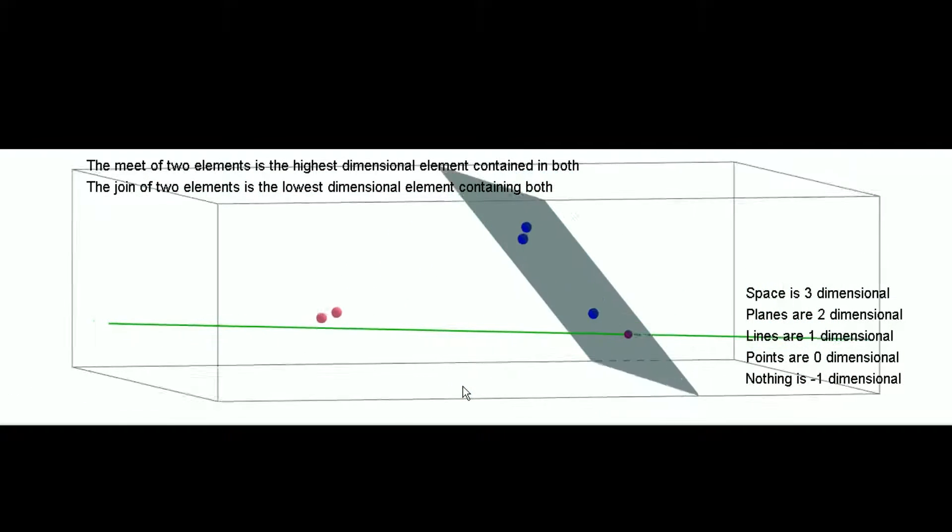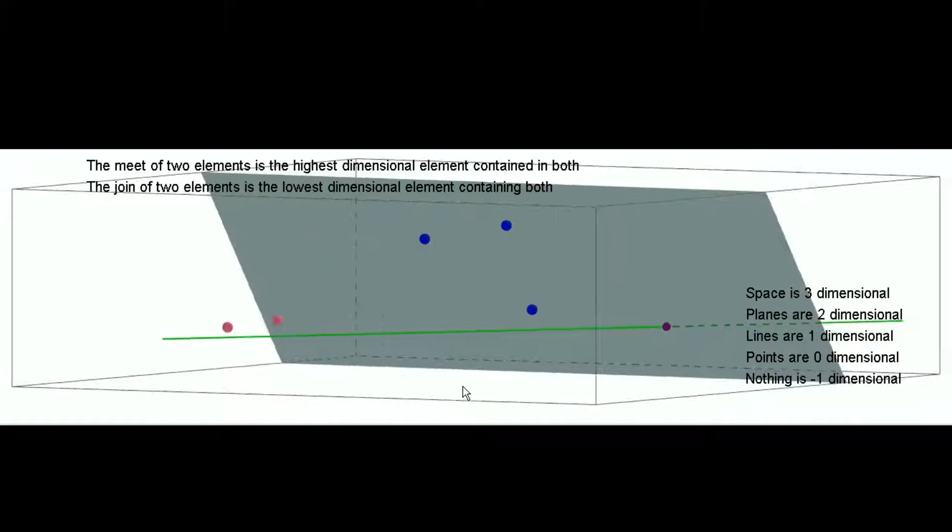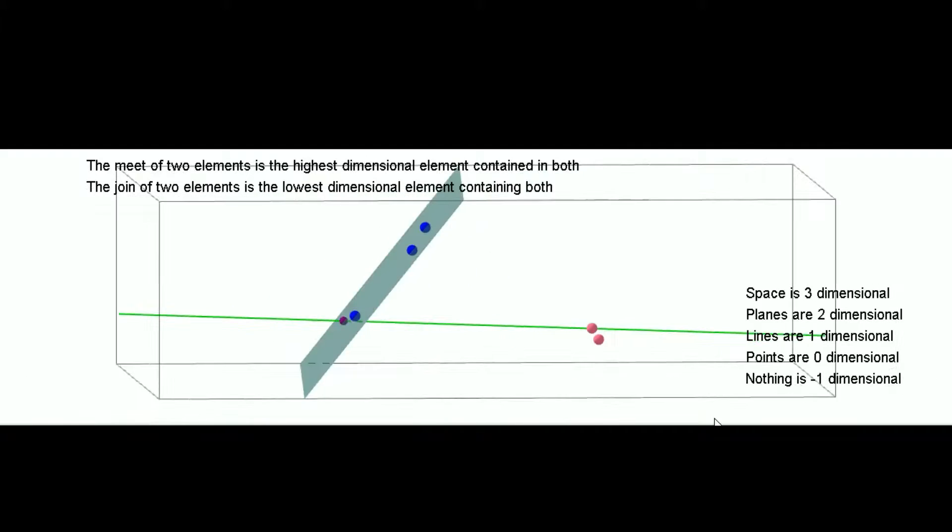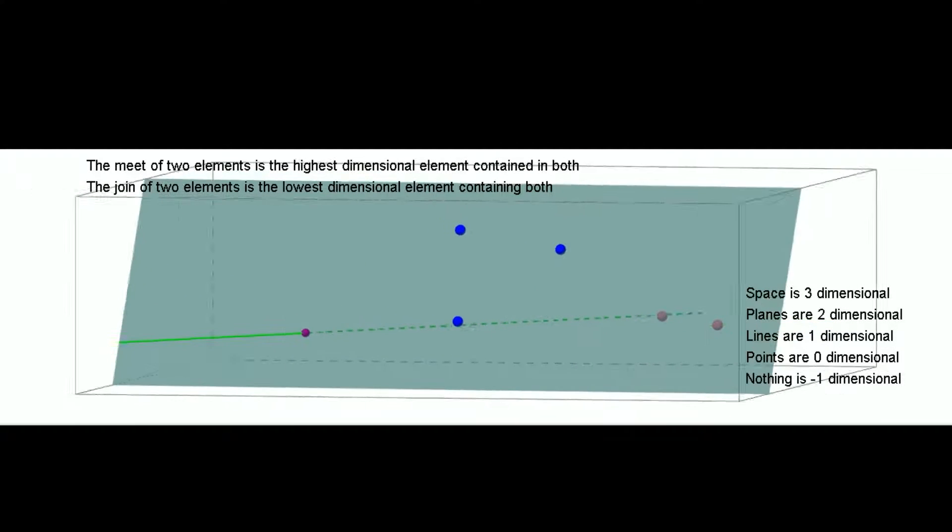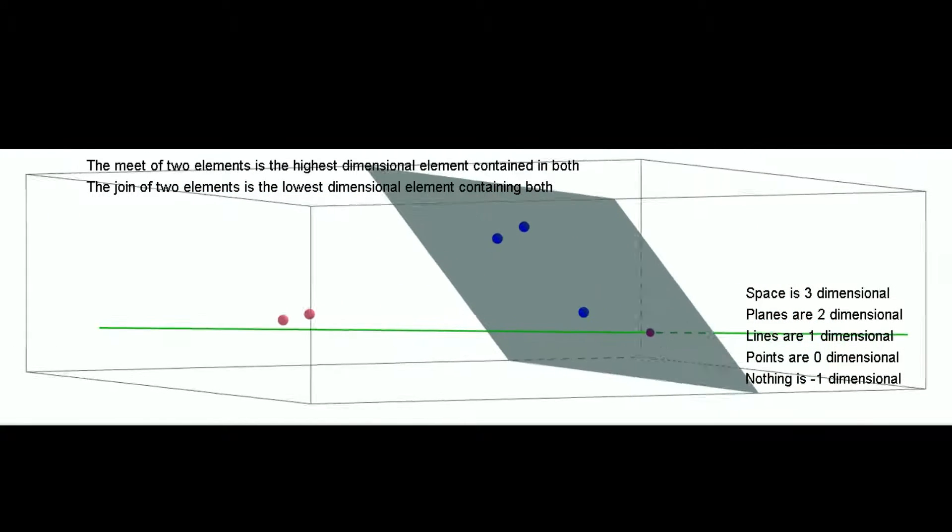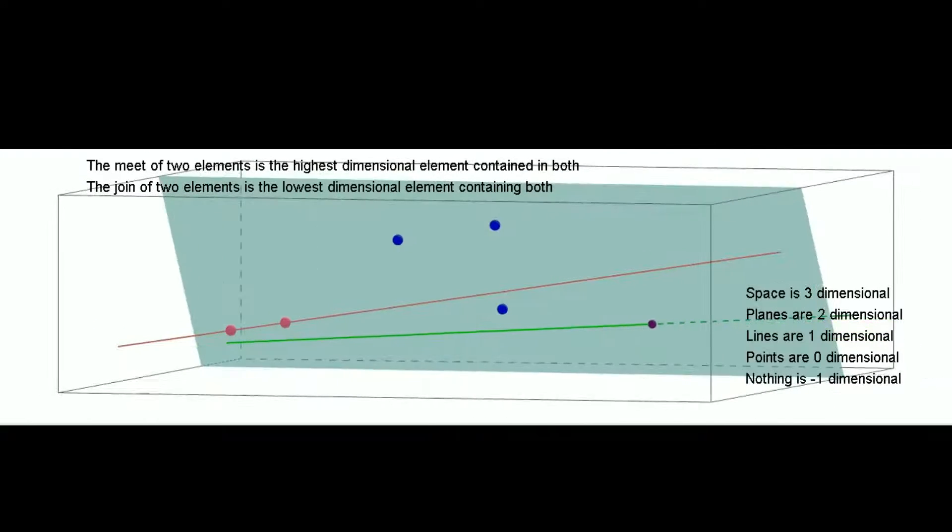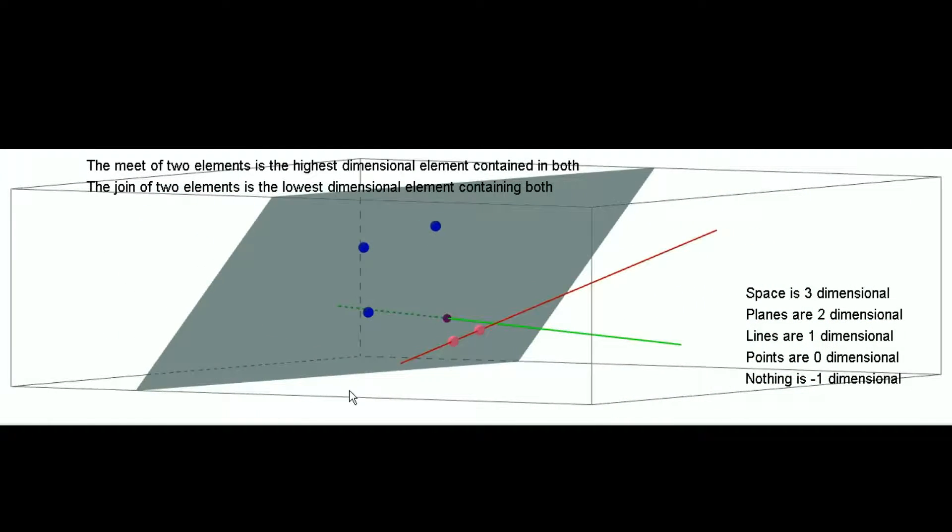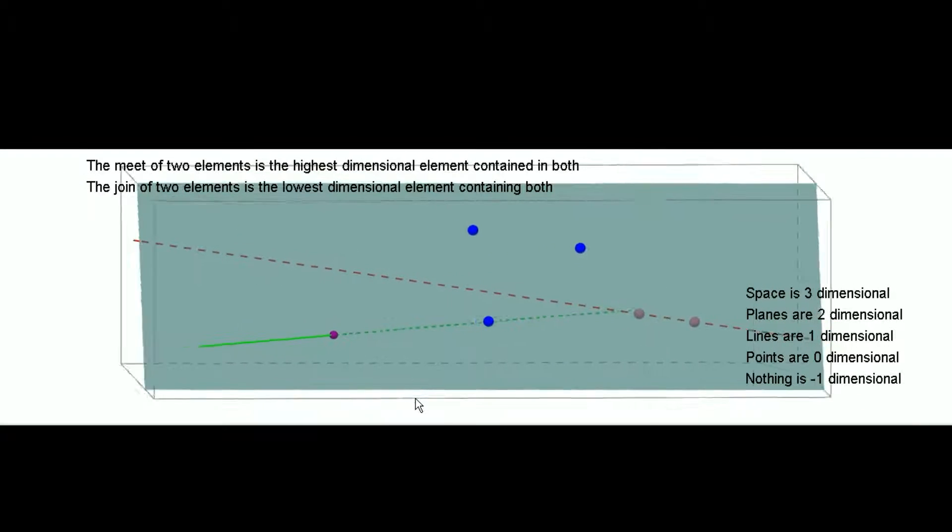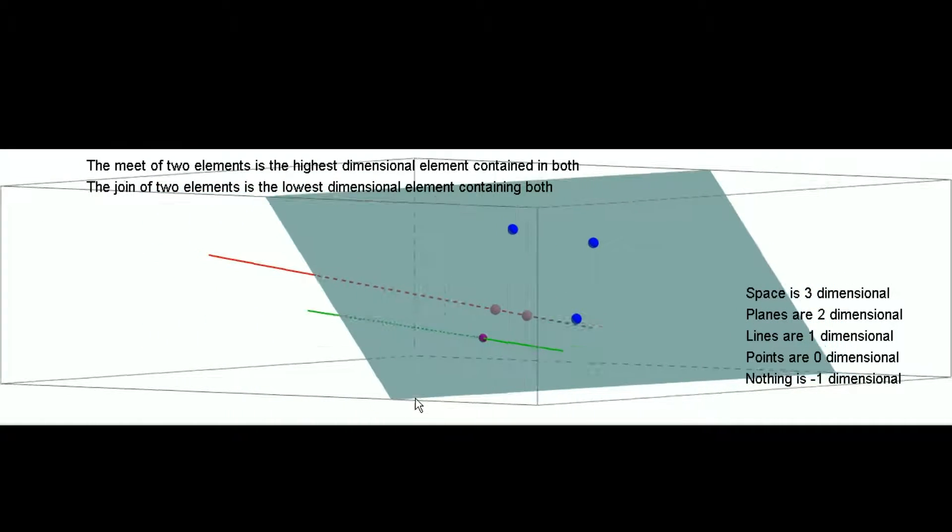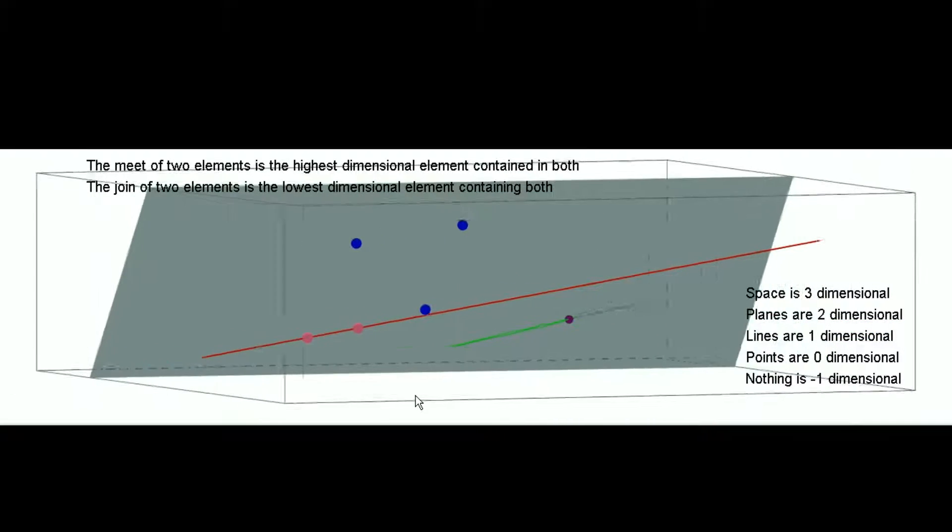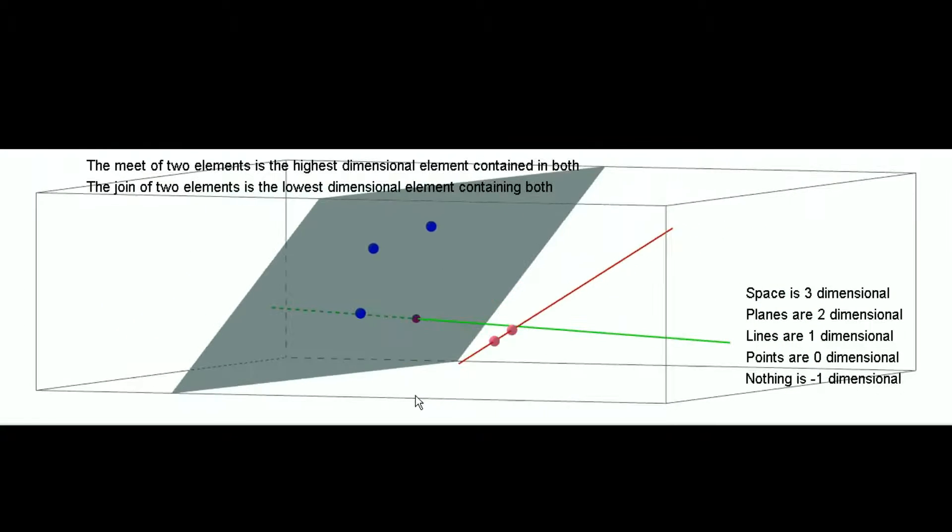So, the other idea is the join of two elements. And that's the lowest dimensional element that contains both of them. So, for example, the join of these two pink points here is this red line that goes through both of them. And now you can probably see why nothing is considered an element. I mean, the red line and the green line, they don't meet. So, their meet is nothing, which is an element as well.